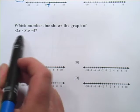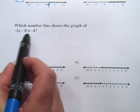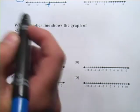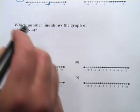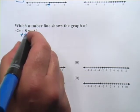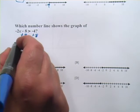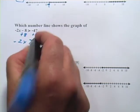It says, which number line shows the graph of negative 2x minus 8 is greater than negative 4? So once again, we're going to start by solving for x, and we'll add 8 here. And we get negative 2x is greater than positive 4.